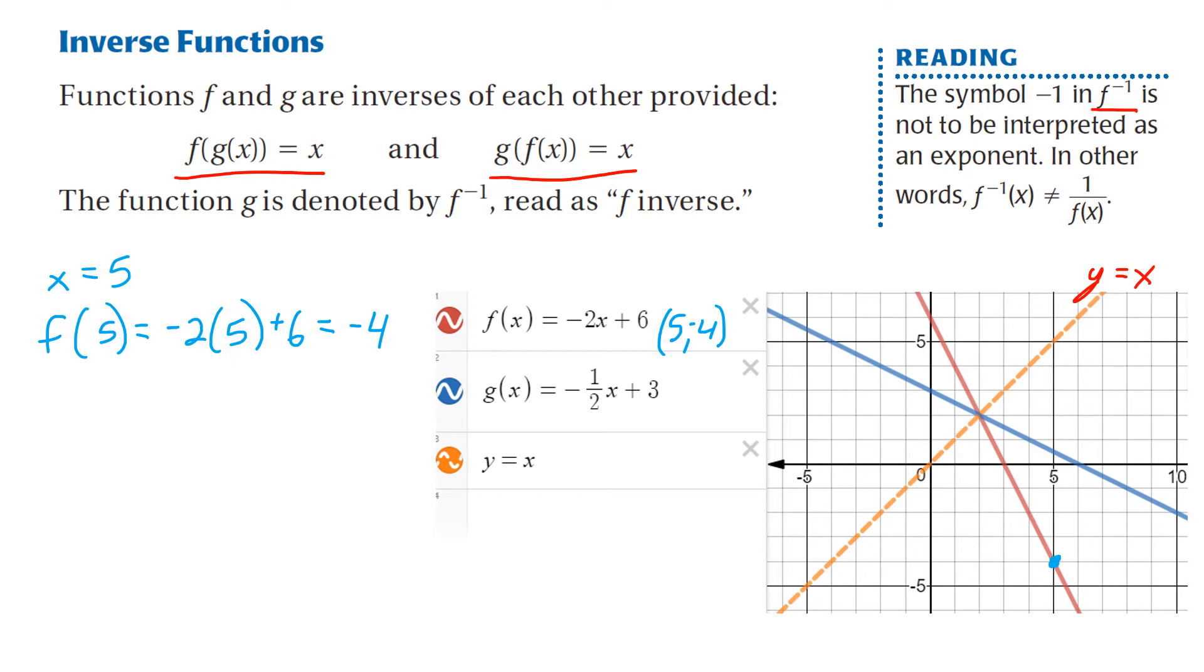If you take the result, which was negative 4, and then substitute it into g(x), so I'm going to find g of negative 4. Substitute that, that gives me 2 plus 3, which is 5.